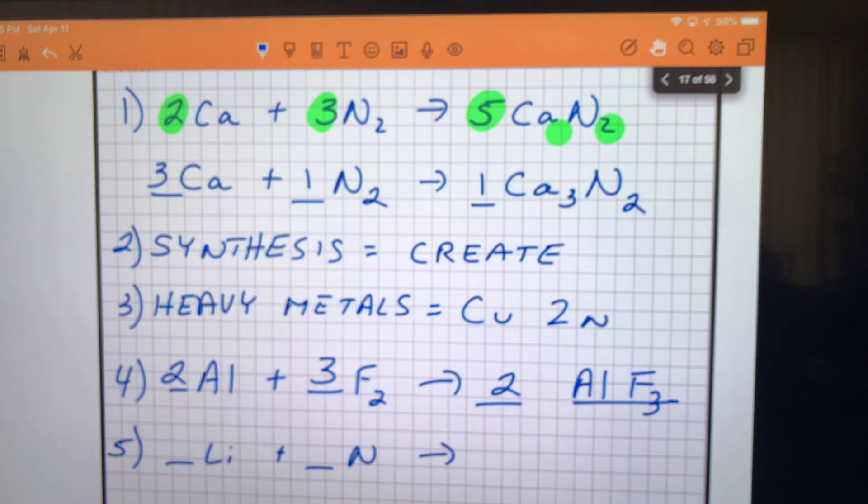We'll create the product. The lithium comes first, it's furthest to the left, it's also the metal. Nitrogen has a minus three charge, lithium one, so it's going to be Li3N1, which we don't write the ones. Let's go ahead and balance. We're going to start out with the nitrogen being diatomic, that puts a two right there. Then we have to balance this, so we need three lithiums on the left.